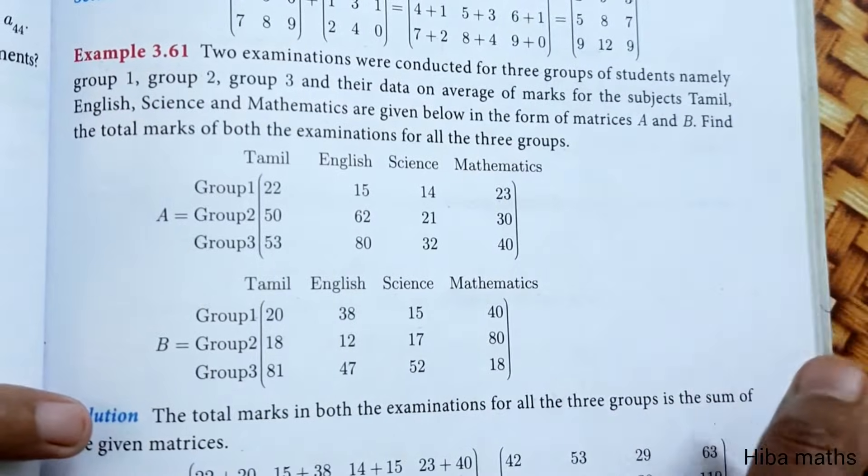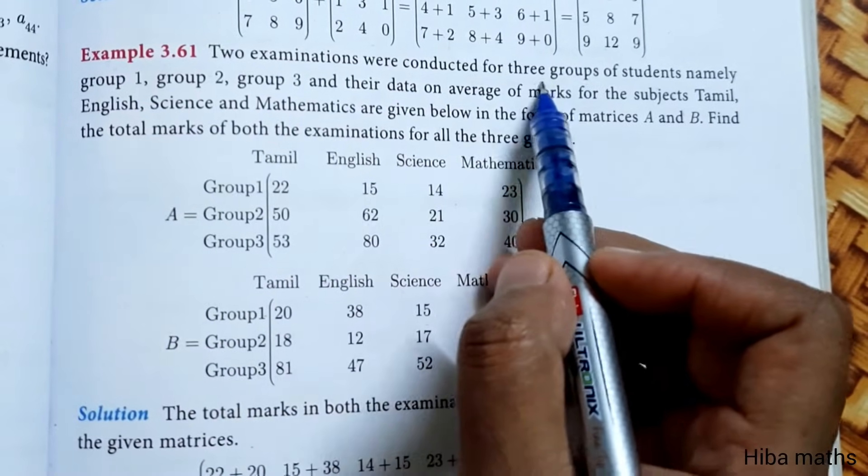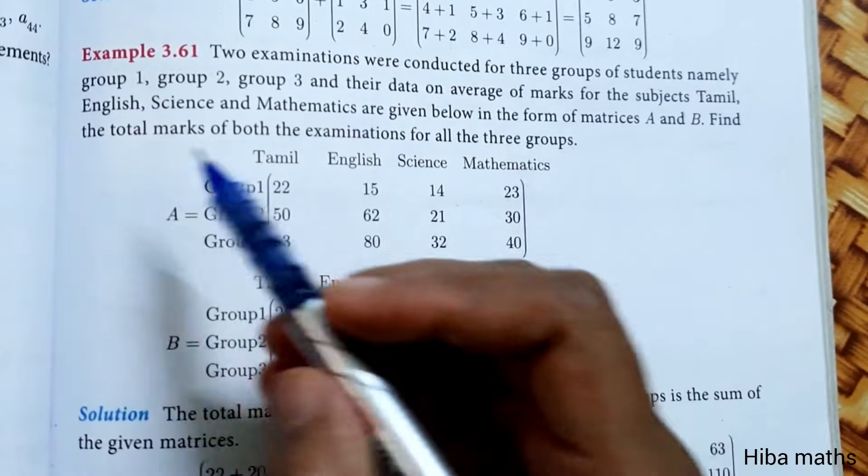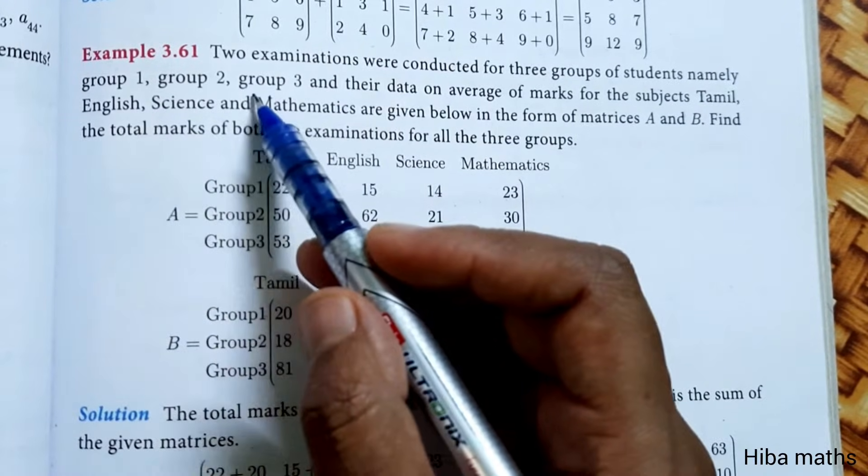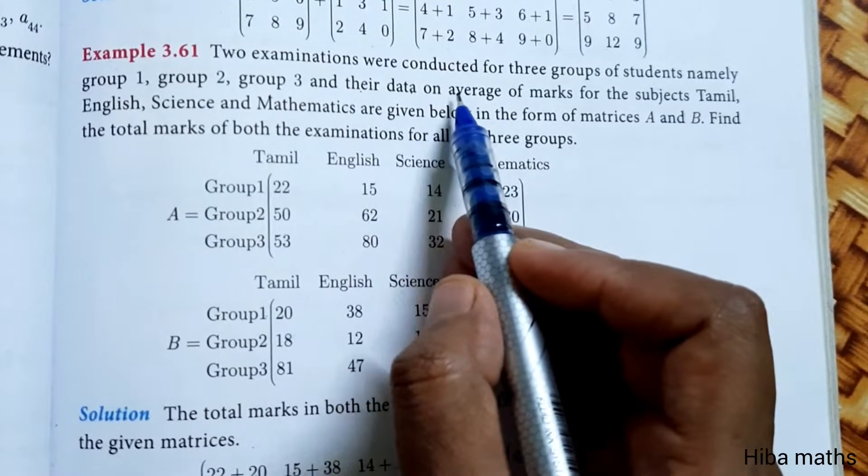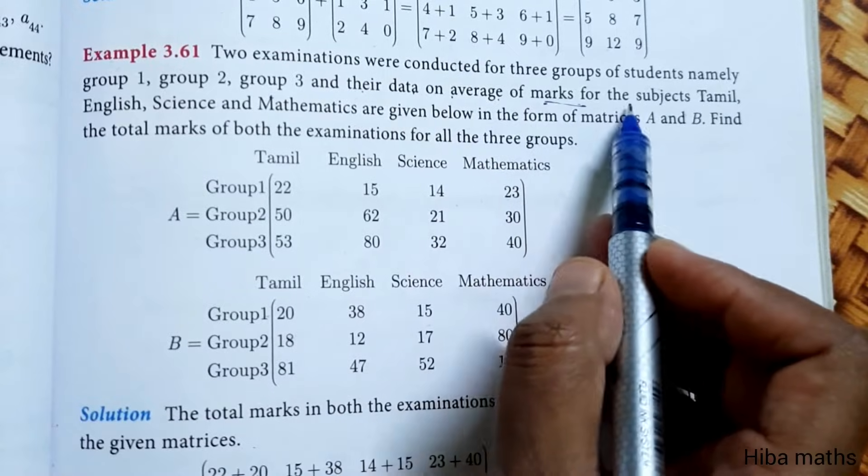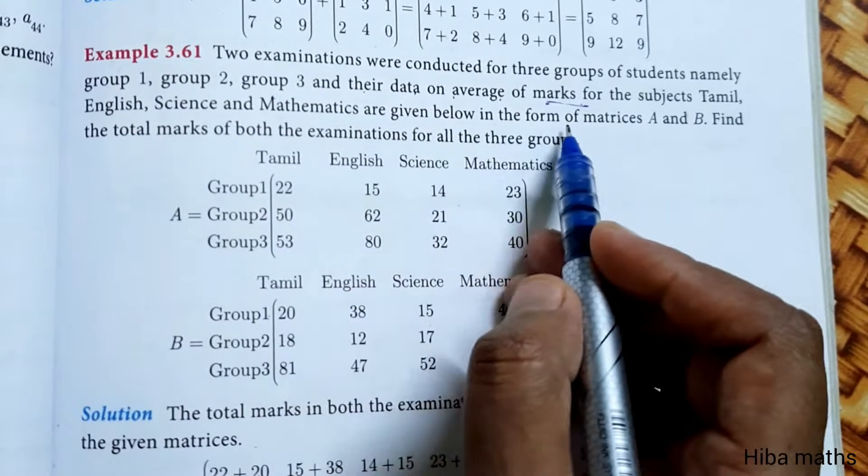10 Standard Maths Chapter 3 Example 3.61. Two examinations were conducted for 3 groups of students, namely Group 1, Group 2, and Group 3. The data on average marks for the subjects Tamil, English, Science, and Mathematics are given below in the form of matrices.